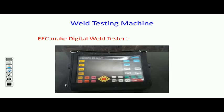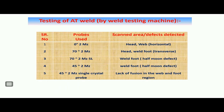For weld testing, various probes are used: 0-degree 2 MHz probe, 70-degree 2 MHz probe, 70-degree 2 MHz side-looking probe, 45-degree 2 MHz probe, and 45-degree 2 MHz single crystal probe. The 0-degree probe is used for horizontal defects in head and web. The 70-degree 2 MHz probe is used for transverse defects in head and weld foot. The 70-degree side-looking probe is used for half-moon defects in the weld foot. The 45-degree probe is used to detect half-moon defects, and the 45-degree single crystal probe detects lack of fusion in the weld foot region.